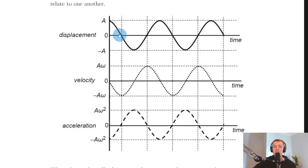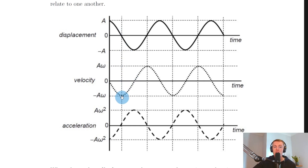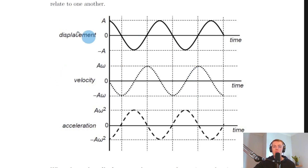Looking at the graphs again, you can see zero displacement corresponding to zero acceleration at multiple points. For velocity, zero displacement corresponds to maximum velocity — sometimes negative, sometimes positive — alternating as the object oscillates back and forth through equilibrium.